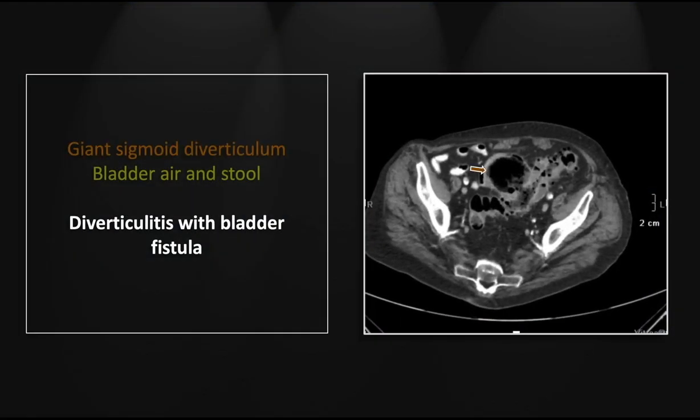There is a giant diverticulum adjacent to the sigmoid colon — a large collection of gas and debris with a heterogeneously thickened wall. Note also there is a defect at its base where it communicates with the lumen of the sigmoid colon. There is otherwise extensive diverticulosis and hypodense wall thickening throughout the sigmoid colon.